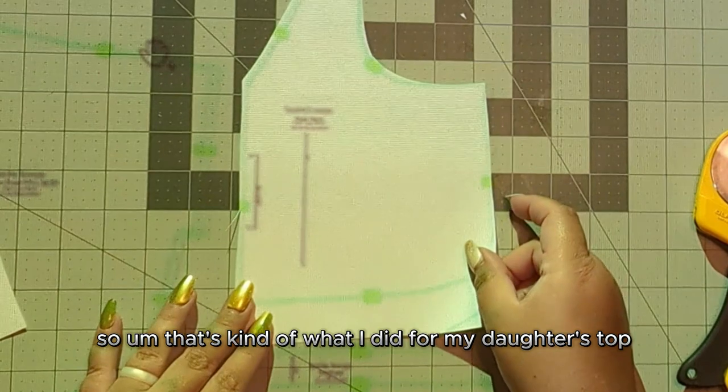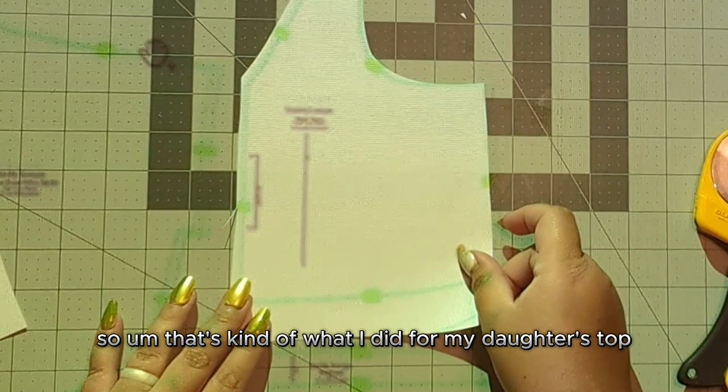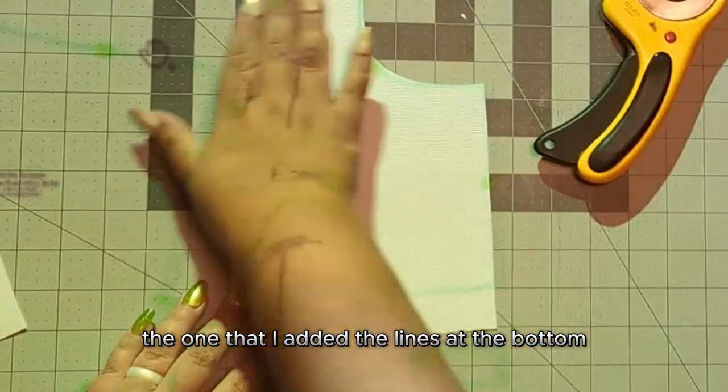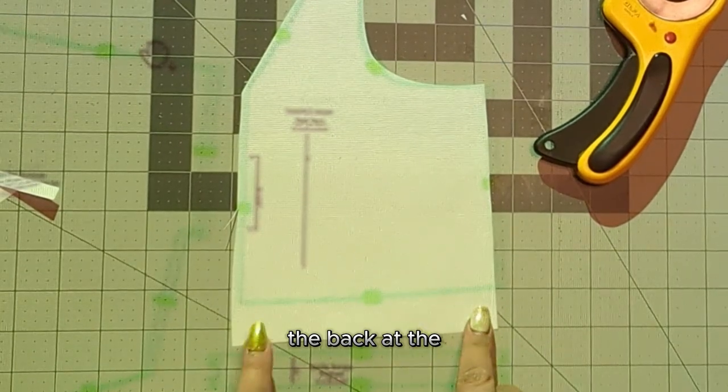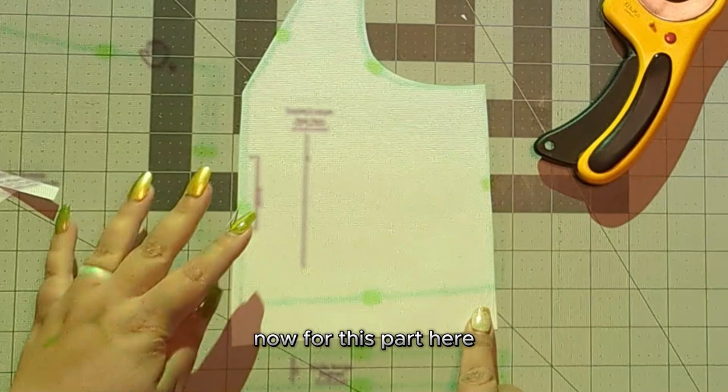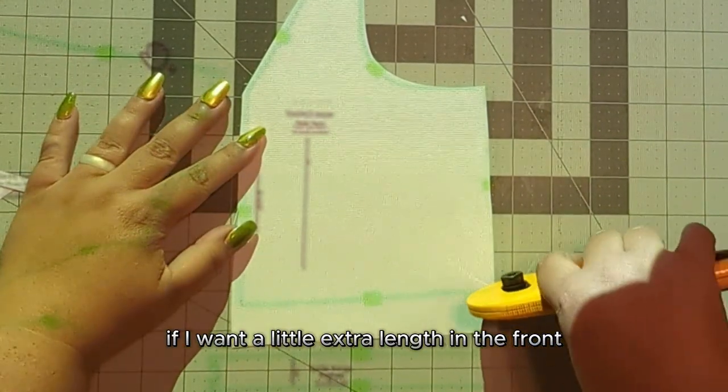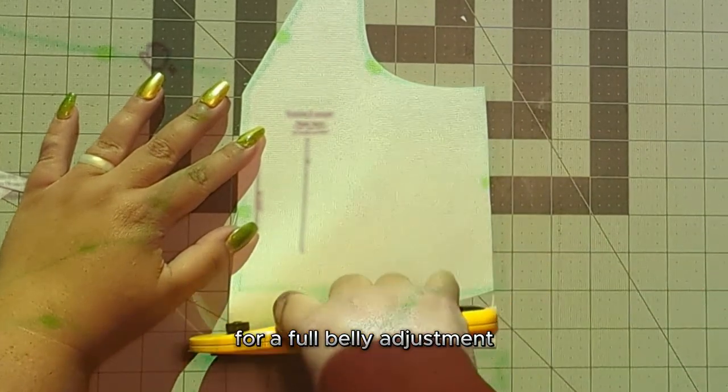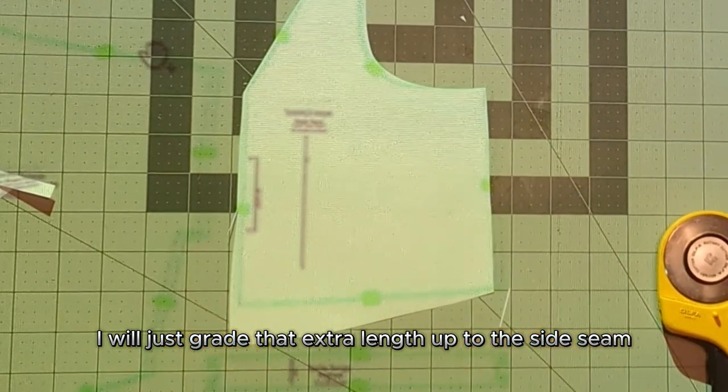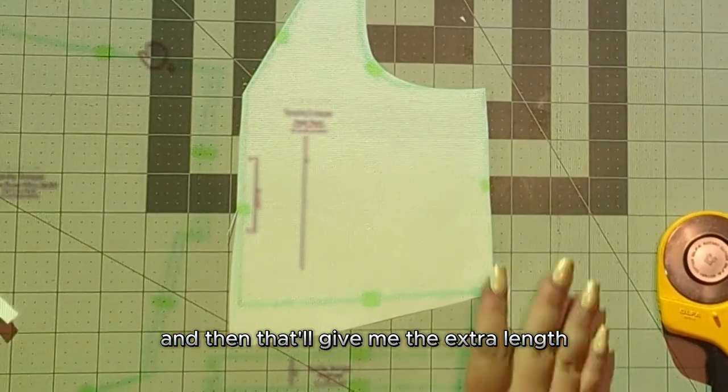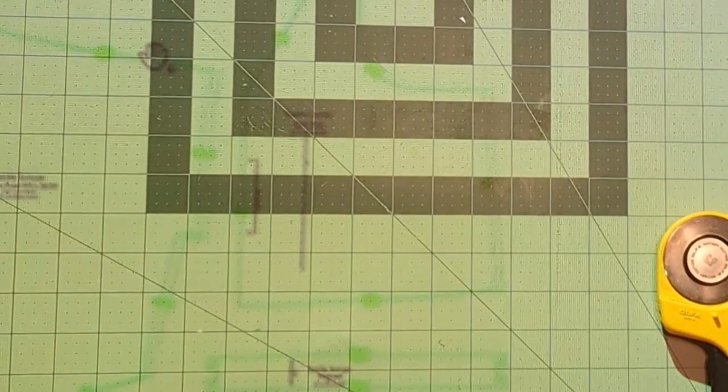That's kind of what I did for my daughter's top. The one that I added the lines at the bottom, in the back when we were still in Adobe. Now for this part here, this is how I do a lot of my tops. If I want a little extra length in the front for a full belly adjustment, I will just grade that extra length up to the side seam. And then that'll give me the extra length where I need it in the front without having to worry about it too much.